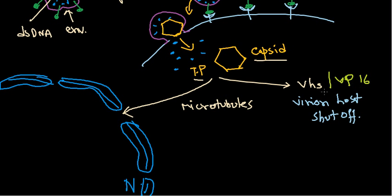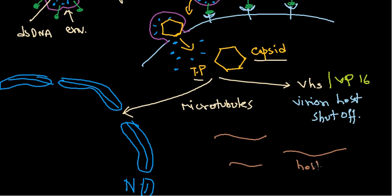These two proteins play a vital role in the HSV life cycle. The virion host shutoff protein, as the name suggests, will shut off the transcription machinery of the host cell. It will also block translation of host mRNAs — it will go and degrade the host mRNAs present in the cytoplasm.